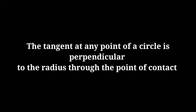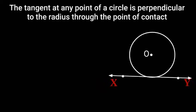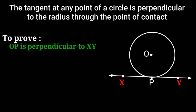The tangent at any point of a circle is perpendicular to the radius through the point of contact. Given a circle with center O and a tangent XY to the circle at a point P. To prove, OP is perpendicular to XY.